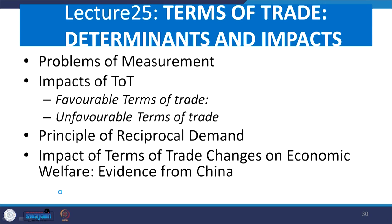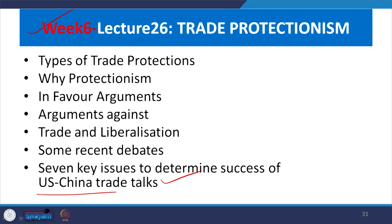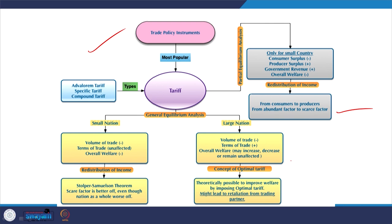From week number 6 onwards, trade protectionism was discussed at large — why protectionism, what are the different types, arguments in favor, arguments against, and certain cases with the US-China trade war. In lecture number 27 on types of protections, we compared ad valorem, specific, and compound tariffs, import quota, economic effects of quota, voluntary export restraints (VER), product subsidies, embargoes, and foreign exchange control. Tariff is not always successful — there are many evidences of non-tariff barriers raised among member countries, because tariffs are retaliatory.